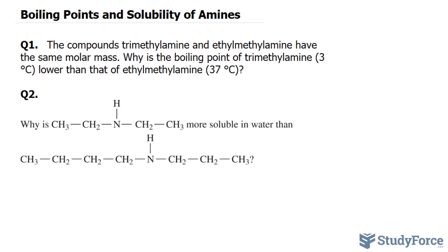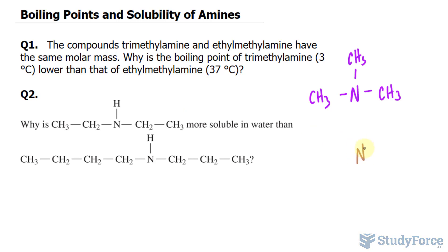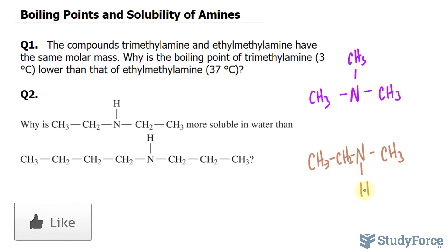If we draw out trimethylamine, that's the common name for a compound where we have nitrogen single bonded to three methyl groups. And ethylmethylamine looks like this, where we have nitrogen with the alkyl group ethyl — CH3, CH2 — and then the substituent methyl, CH3. As you can see, this amine is a secondary amine where it also has a hydrogen. Trimethylamine is a tertiary amine — notice the three substituents.